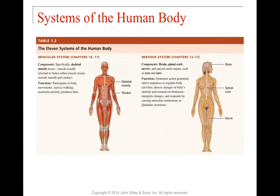The muscular system — specifically skeletal muscle, though we also have smooth muscle and cardiac muscle — consists of muscle attached to bones that moves the skeleton. The functions of skeletal muscle include body motion such as walking and maintaining posture, and it also helps produce heat. Muscles help create the human body's heat.